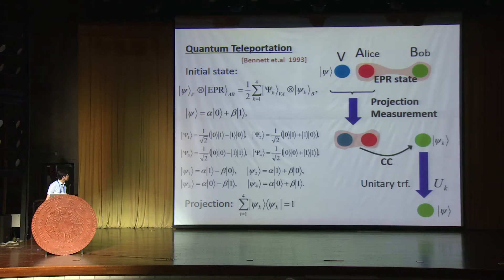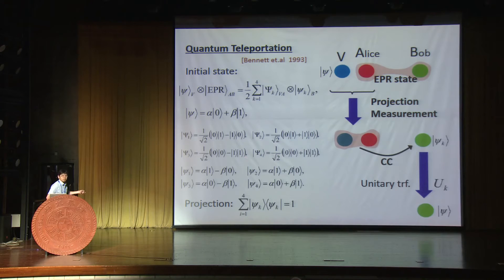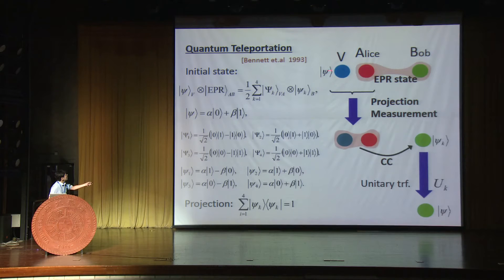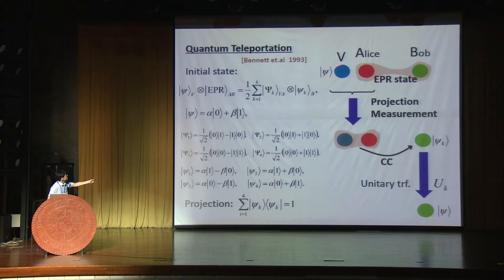One highlight of quantum operations is the famous procedure called quantum teleportation. We want to send some state psi from Alice to Bob. Alice and Bob share some entangled EPR pair, and by using this entanglement, we can actually send this information psi to Bob.